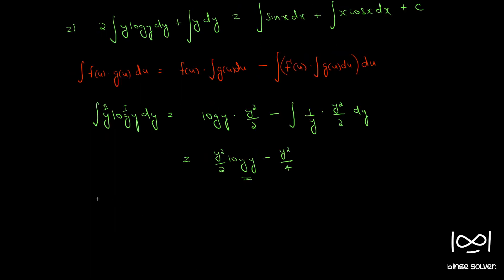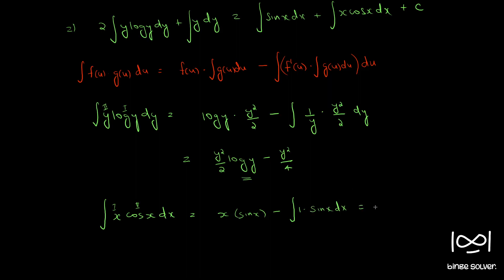Similarly, for the integral of x cos x dx, we choose x as our first function and cos x as our second function. So: x times the integral of cos x which is sin x, minus the integral of the derivative of x (which is 1) times sin x dx. This becomes x sin x minus the integral of sin x, which is minus cos x, so the result is x sin x + cos x.